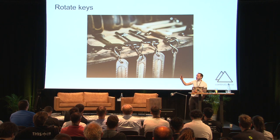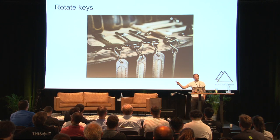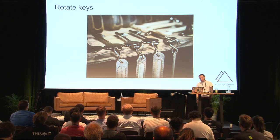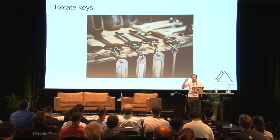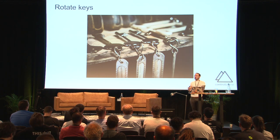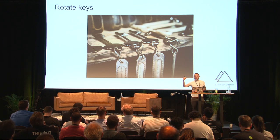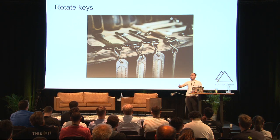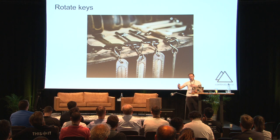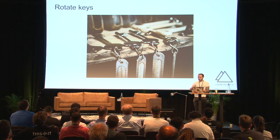There is an experimental encryption provider which allows us to place a symmetric key onto the API server that is used to encrypt all the data that the API server writes into etcd. We can now encrypt both at transit and at rest.